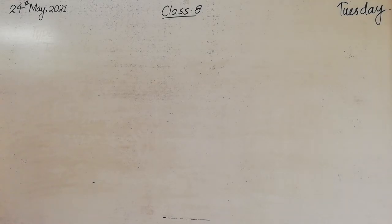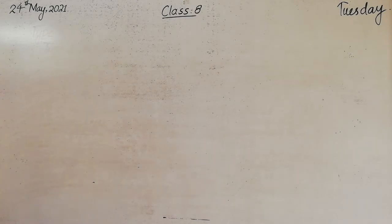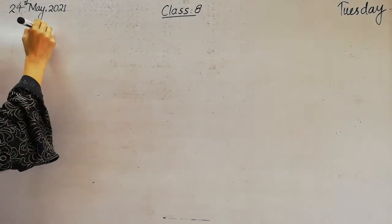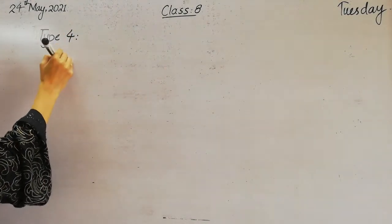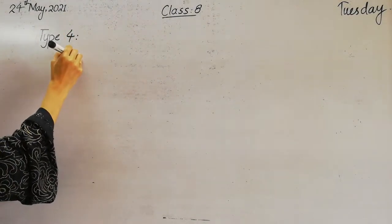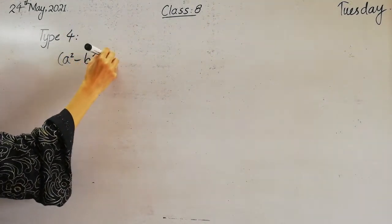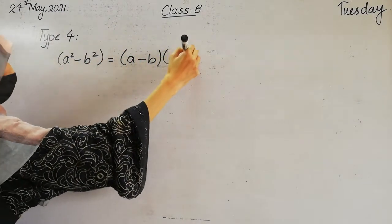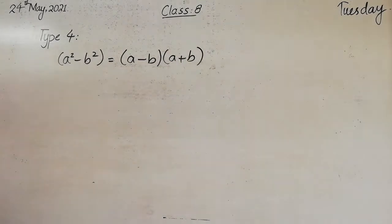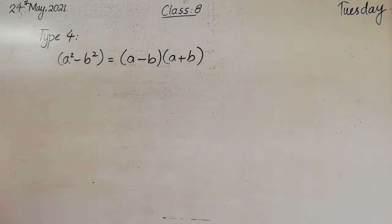Who will tell me what we have learnt yesterday? Yesterday we learnt about factorization of type 4, which is about a square minus b square is equal to a minus b into a plus b. This was our previous lesson. And how did we solve this?